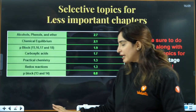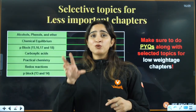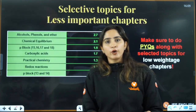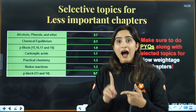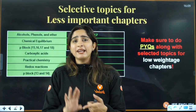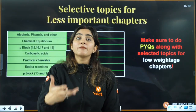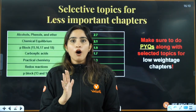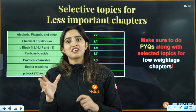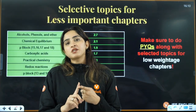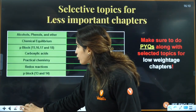For p-block (groups 13–18): do the exceptions. You don't need to do compounds and their reactions — that's not even in your JEE syllabus. Focus on exceptions in hydride melting point, boiling point, radius, and electronegativity — understand the reasons behind those exceptions. If they ask from p-block or periodic classification, the question will most likely be about oxide nature or exceptions.